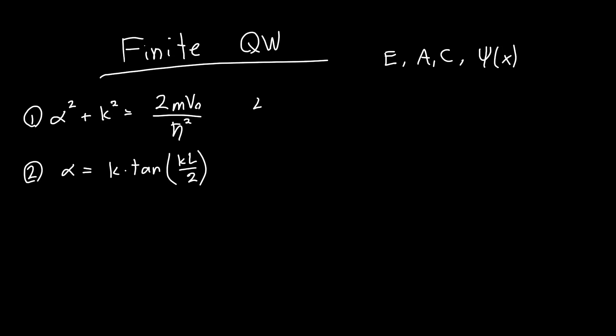And these are two equations that involve two unknowns, which means they're in principle solvable. You could plug this into a computer if you knew a value of V naught, m, and L, and you can solve for alpha and k. And from there you could figure out the energy, and from there you could figure out the coefficients. But while it's doable, it doesn't give a whole lot of insight into how finite quantum wells actually work.